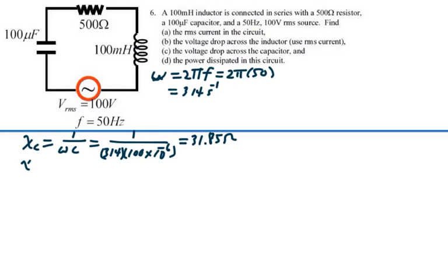Our inductive reactance will be omega times L, and that's going to be 314 times our inductance, which is 100 mH or 0.1 henrys, and that's going to be 31.4 ohms.